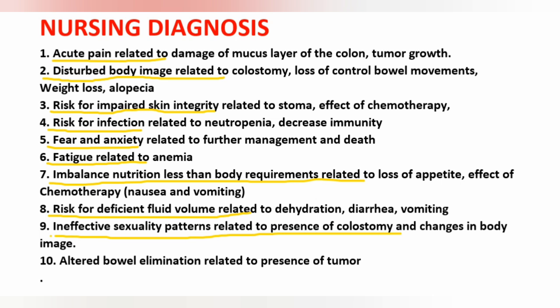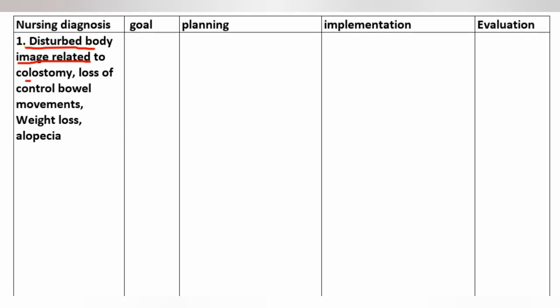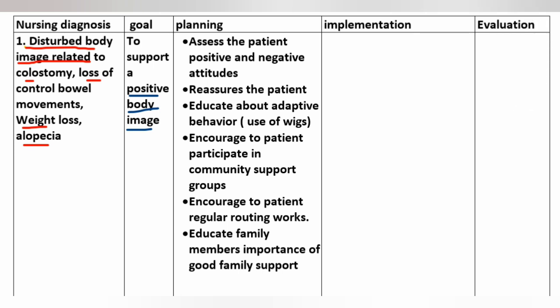Nursing Diagnosis Number 1: Disturbed body image related to colostomy, loss of control of bowel movements, weight loss, and alopecia. Goal: to support a positive body image. Planning: assess the patient's positive and negative attitudes, reassure the patient, and educate about adaptive behaviors such as use of wigs.